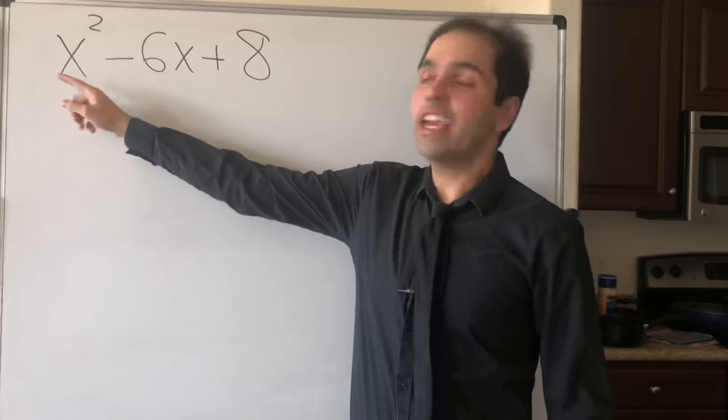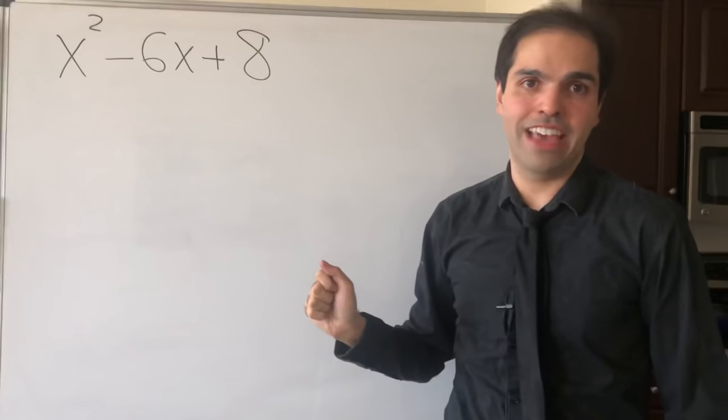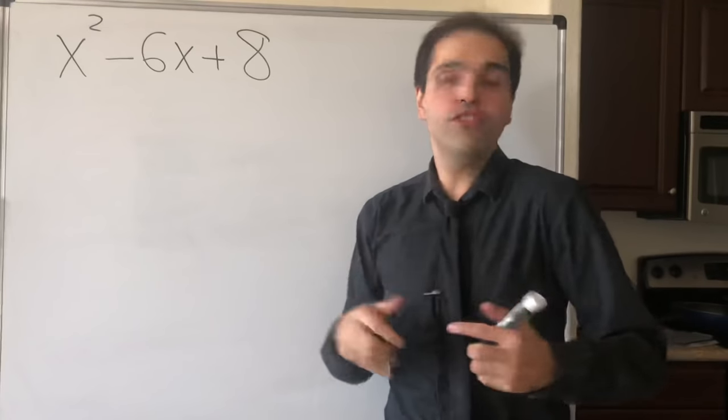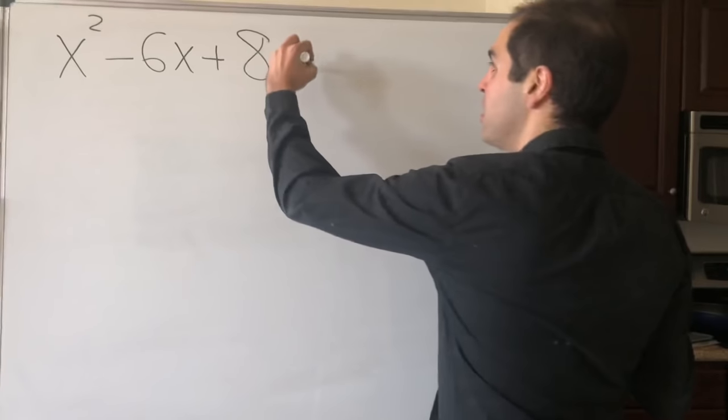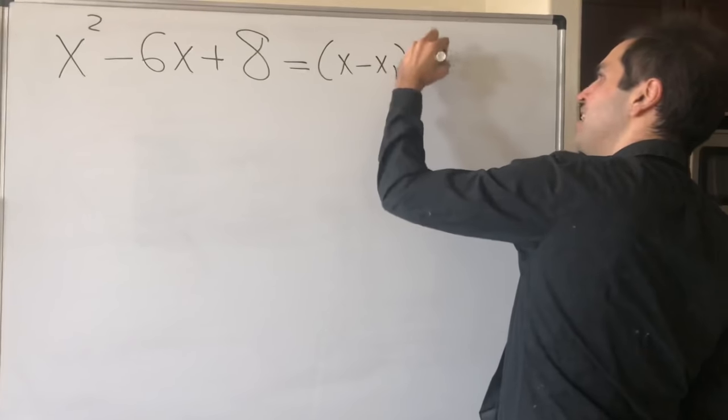So suppose you're trying to find the zeros of x² - 6x + 8. Well, if you try to factor this out as (x - x₁)(x - x₂), so where x₁ and x₂ are the roots...